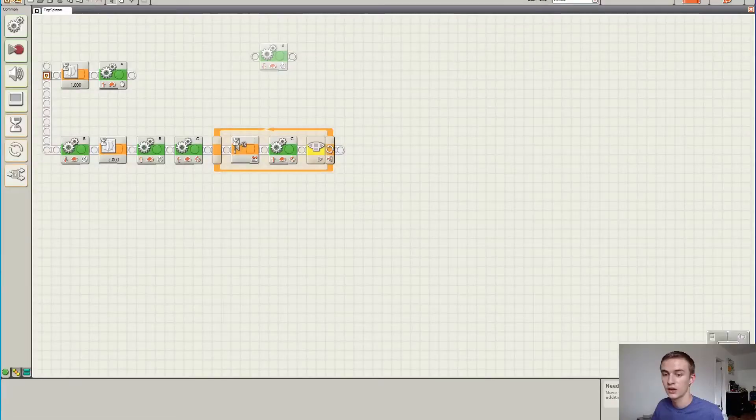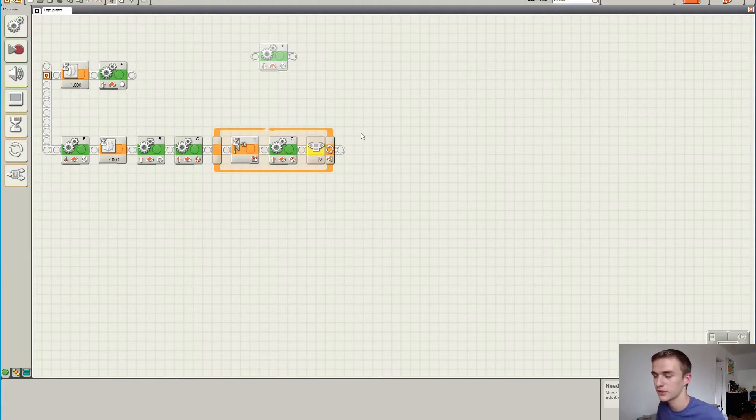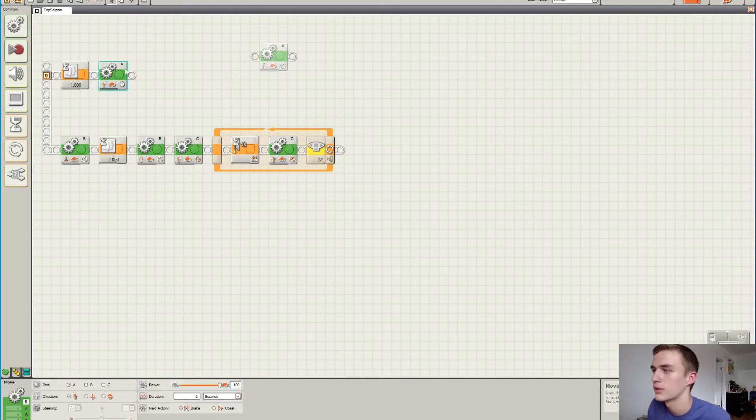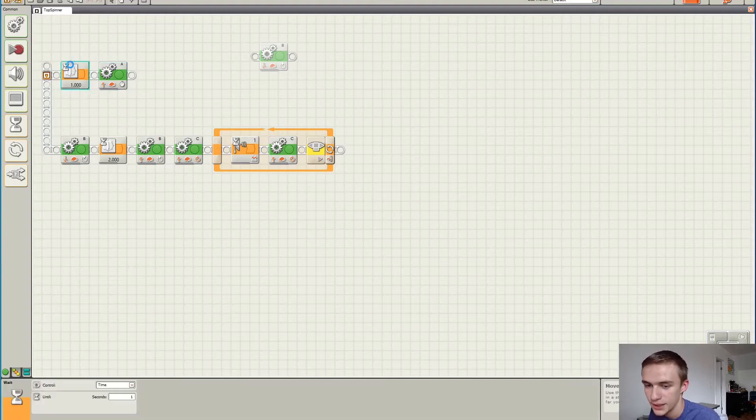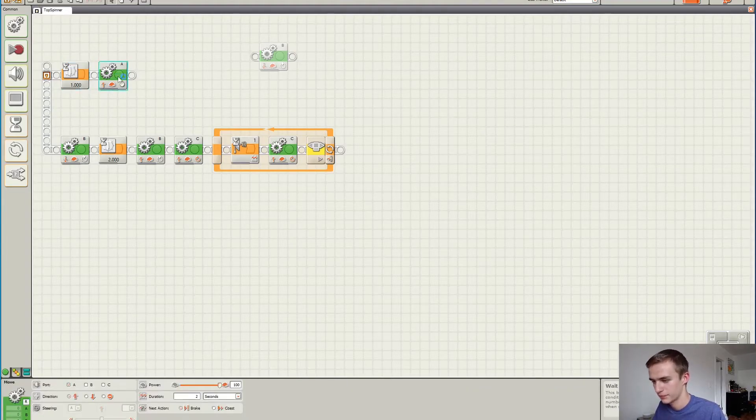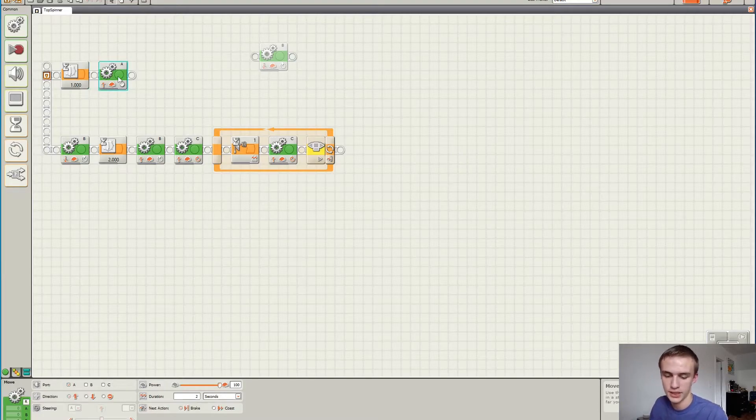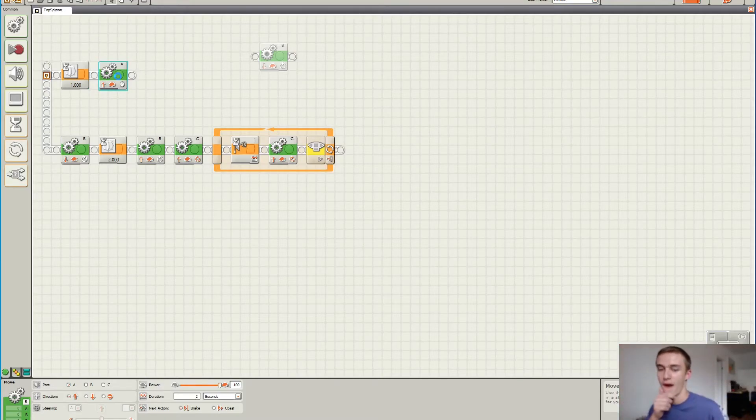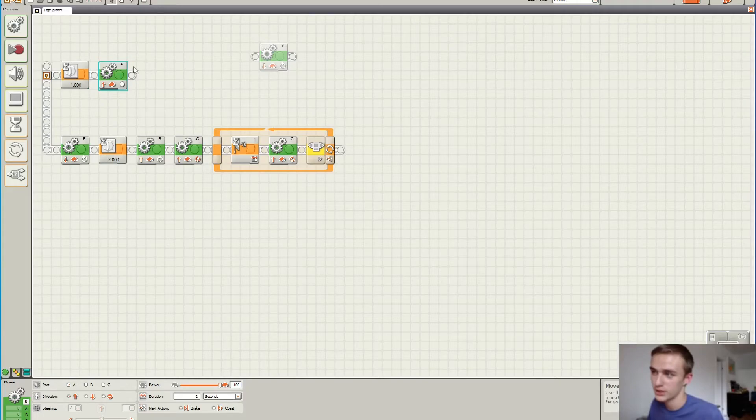Okay guys, so this is the code right here for the top spinner. So this is what the code looks like. You can see at the start both of these right here—they both start at the same time. On the first one it waits a second, and then motor port A runs for two seconds. That would be this motor, so the one that spins the top.